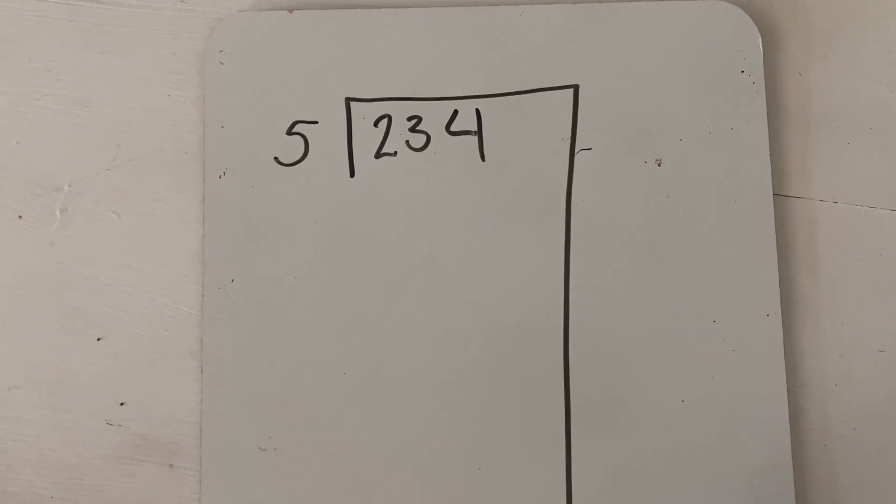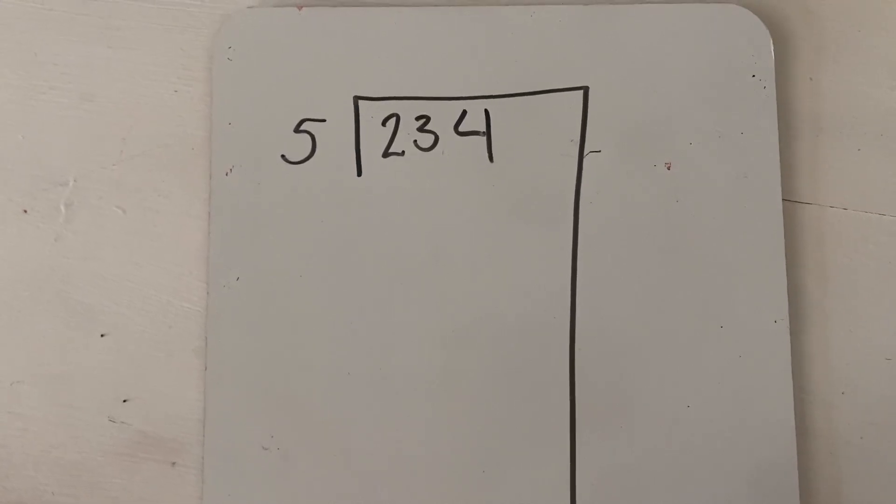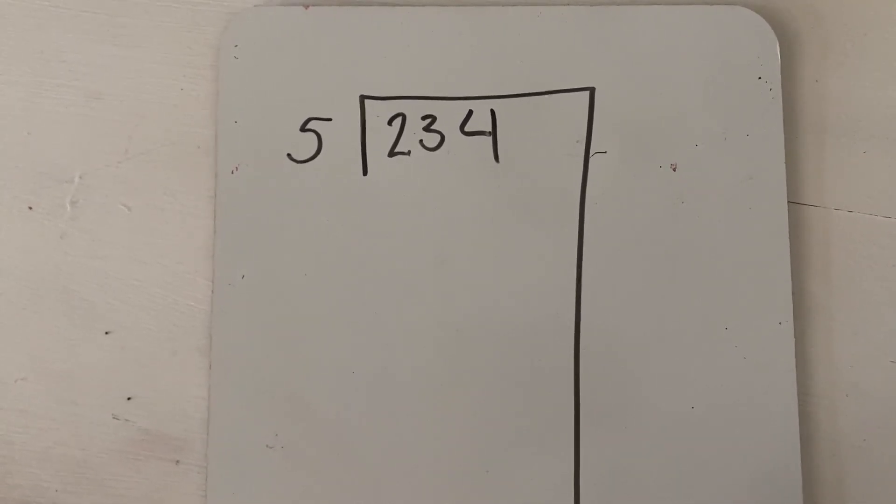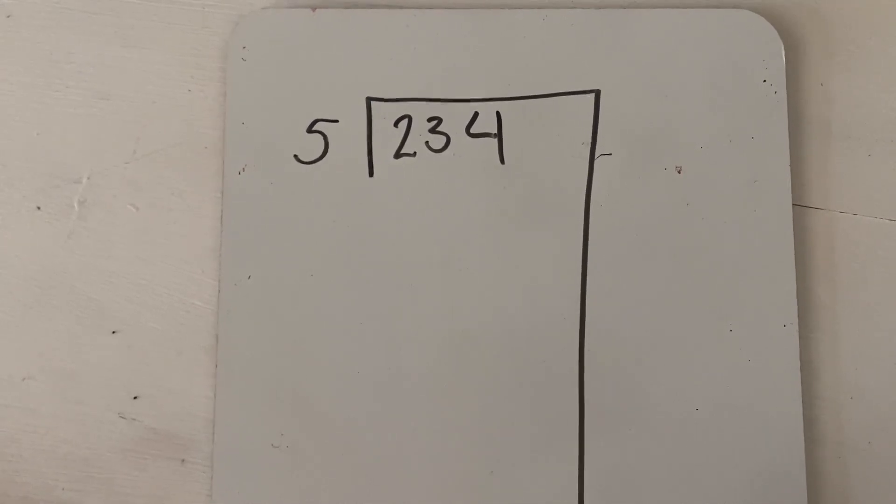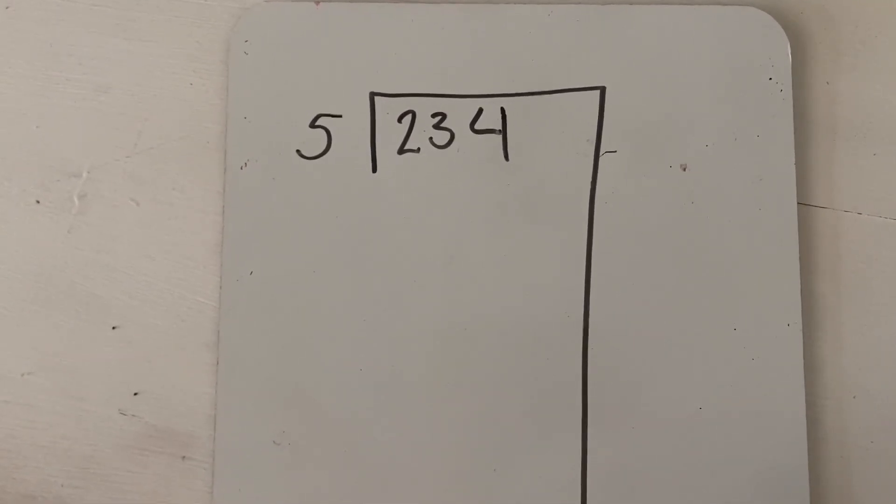And that requires students to understand what their mistake is in the first place, which is tricky, especially when they're learning a new algorithm. So this is a nice method because it allows them to kind of guess and check as they go and then add up their total at the end, which you'll see.